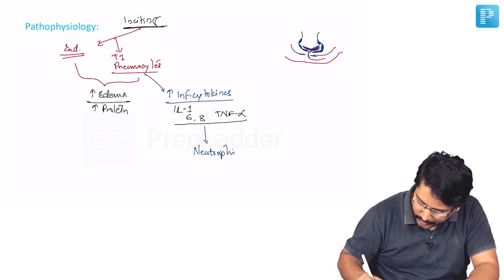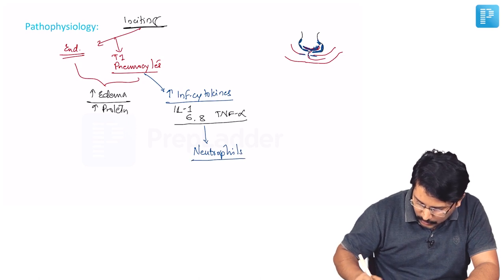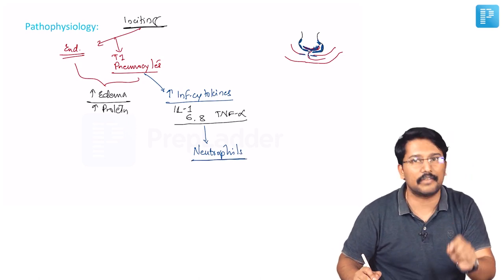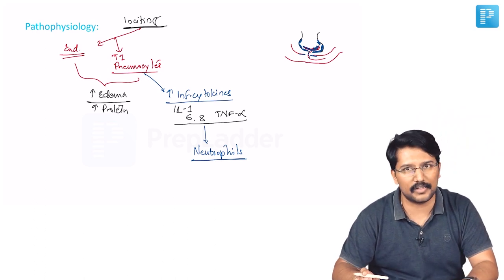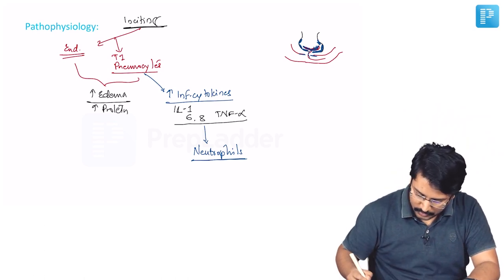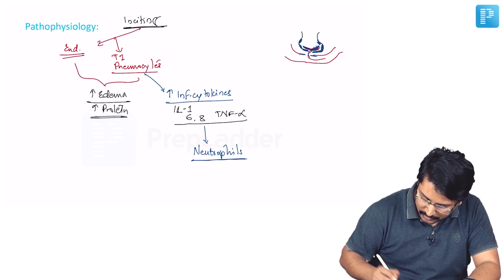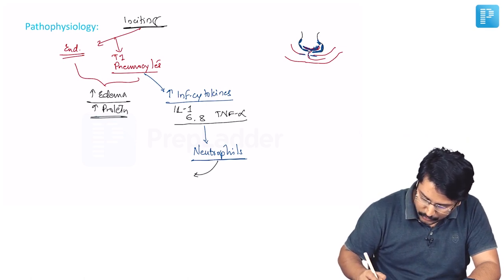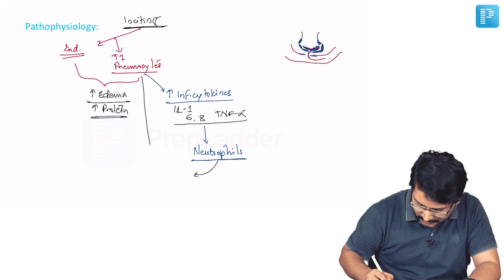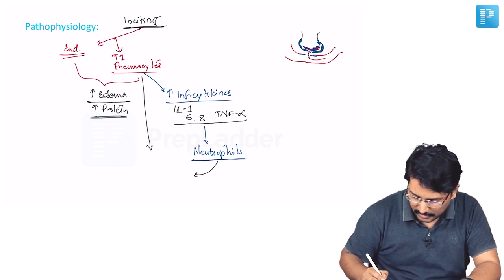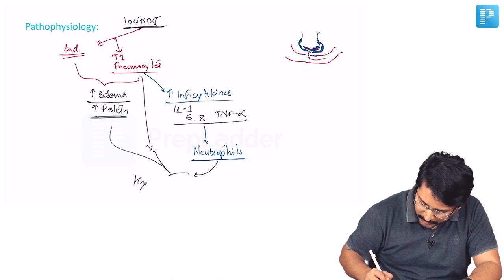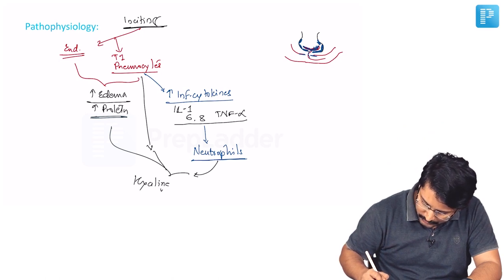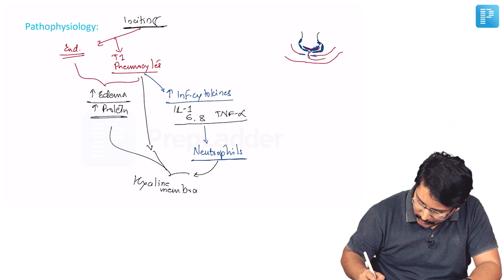We are talking about an important MCQ point. The damage in ARDS is driven by neutrophils. This is a frequently asked point. So this edema and protein along with neutrophils, dead neutrophils mainly and also dead epithelial cells which are basically type 1 pneumocytes, and this protein all put together they will form hyaline membrane.